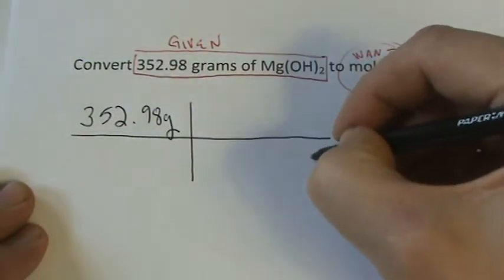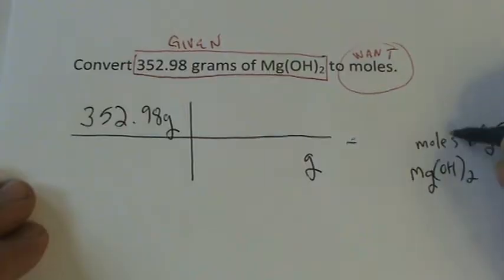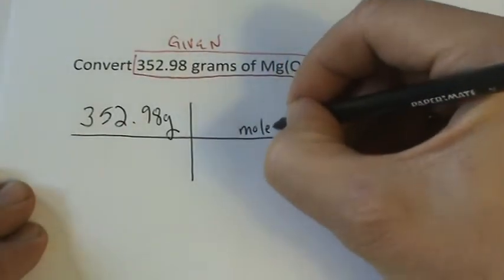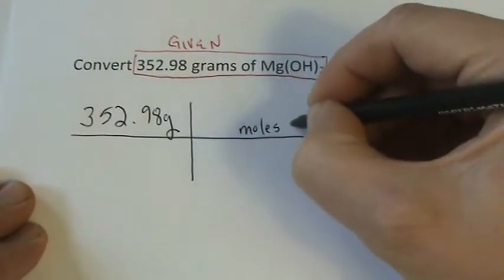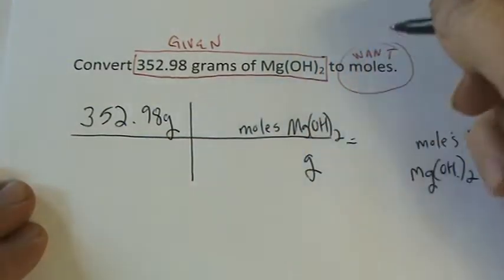If I want to cancel grams out, I need grams on the bottom, and I know that if I want moles of Mg(OH)2, that'll have to go on the top.